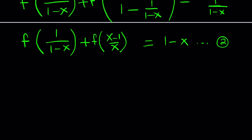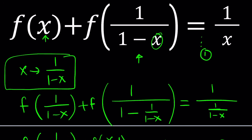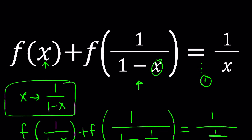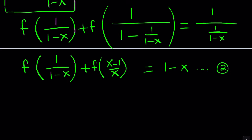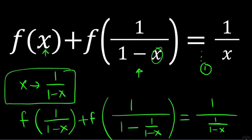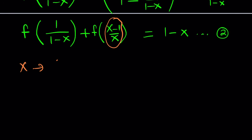We do need a third equation. You can do this in a couple of different ways — you can use the second equation, but I'd like to use the first one because it's simpler. The question is: what should I replace x with? Since something new came up — f of (x minus 1) over x — I'm going to need that. If I set up a system of equations, I need to know what f of (x minus 1) over x is. So it makes sense to replace x with (x minus 1) over x in the original first equation.